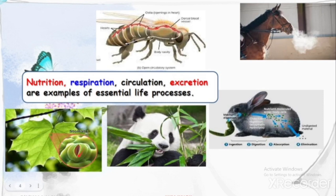That's the respiration process in plants. For example, nutrition — a panda eating some leaves, that's nutrition. A horse taking in oxygen and giving out carbon dioxide is respiration. Nutrition, respiration, circulation, and excretion are all examples of essential life processes.